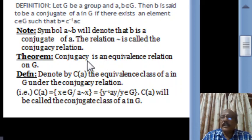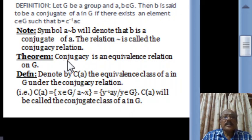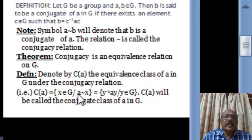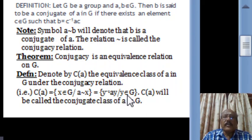One can show that this conjugacy is an equivalence relation on G. Since this relation is an equivalence relation, the group G is divided into equivalence classes. The equivalence class of A is denoted by C(A). So C(A) is the set of all X in G which are related to A. By the definition of the conjugacy relation, X has the form Y inverse AY. To find C(A), it is enough to collect elements of the form Y inverse AY for Y belonging to G. C(A) is called the conjugate class of A in G.